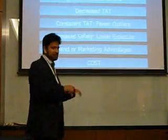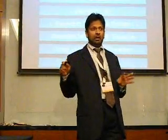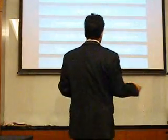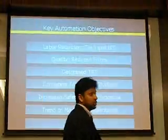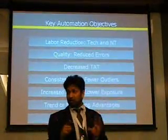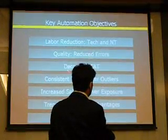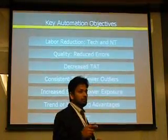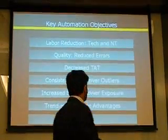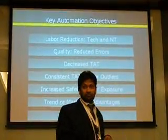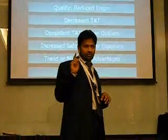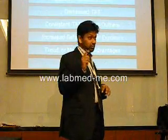Let's look at what the things really are. Labor reduction is definitely one of the things you read about. Quality — as we said — reduce errors, decrease turnaround time. But sometimes more importantly, and you have to remember this, is consistent turnaround time. That's something some people don't really think about. And there's a marketing advantage: having better information than others.